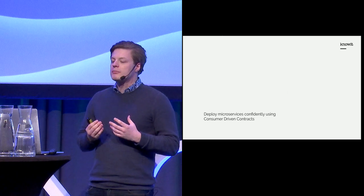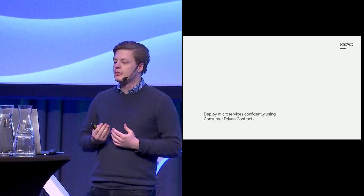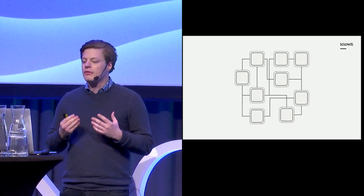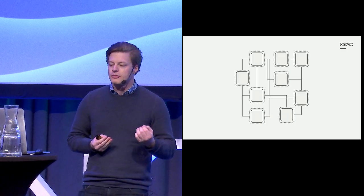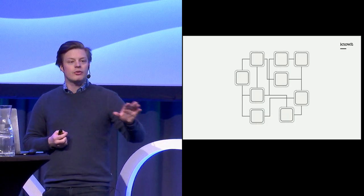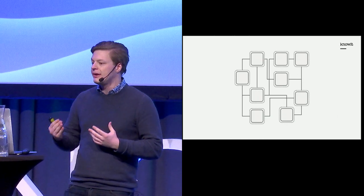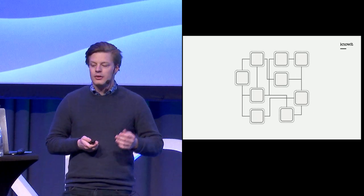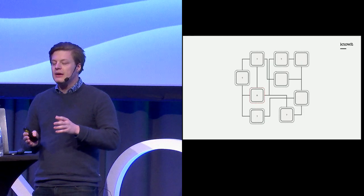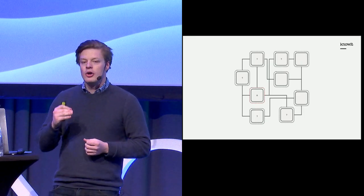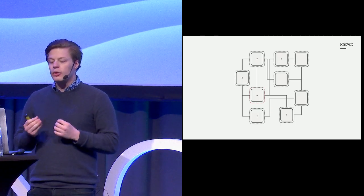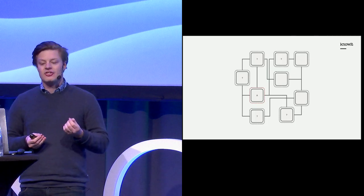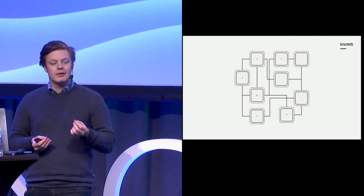I would like to start by explaining the problem I want to solve today. This is an example illustration of a microservice architecture with a handful of services. Each square represents a microservice and all lines are possible communication between them, meaning that one service may use APIs served by the other.